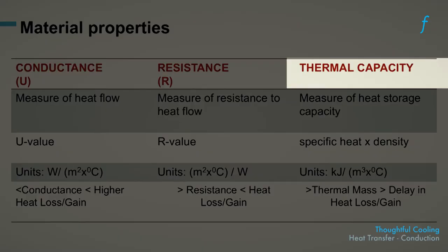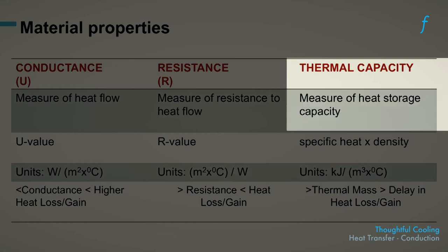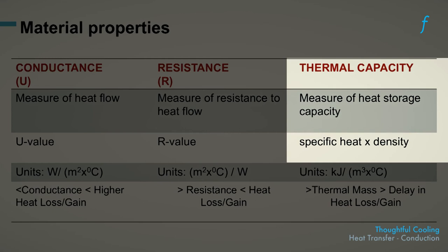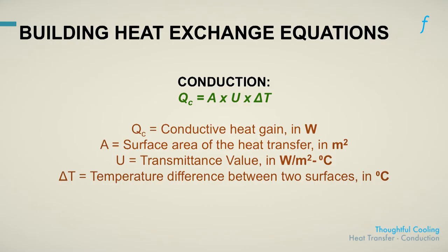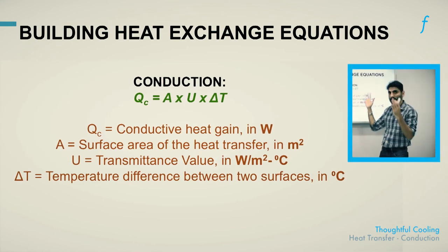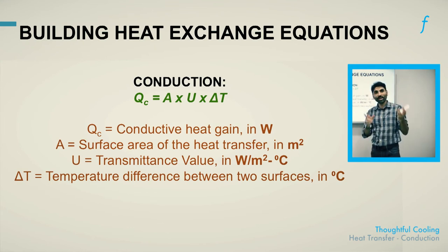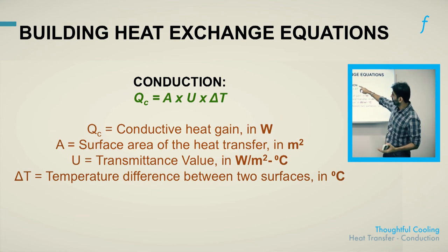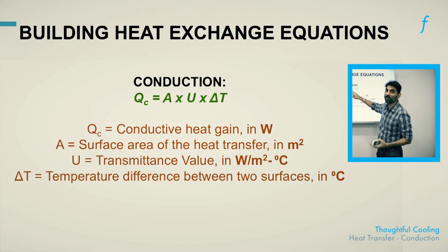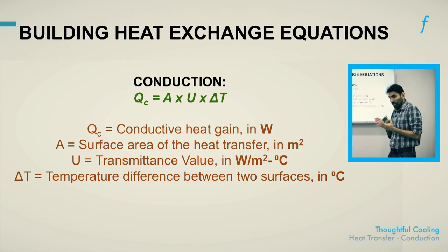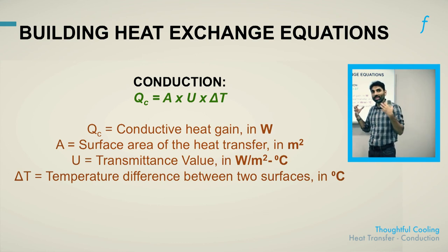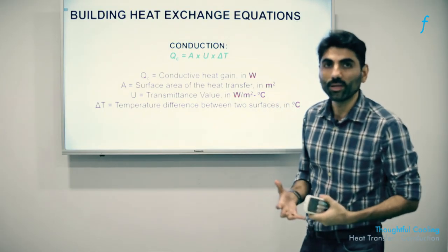Thermal capacity, as emphasized, is a measure of the heat storage capacity of a material, not its ability to delay or conduct heat. The objective for a thoughtfully cooled building should be to use a material with high thermal mass so that heat gain is delayed as much as possible. The amount of heat gained or lost through conduction is directly proportional to the area available for heat transfer, the U value, and the temperature difference. The higher the U value and the greater the temperature gradient, the more rapid the rate of heat absorption or rejection.